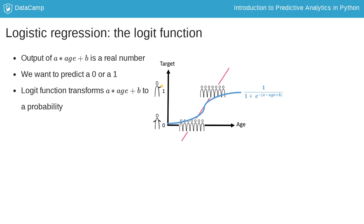Luckily, we can use the logit function to that end. This function takes the regression formula as input and calculates the probability from it as shown in this graph. You can see that the output is indeed a number between 0 and 1. This mathematical trick allows us to use linear regression for binary classification problems.